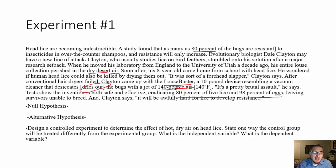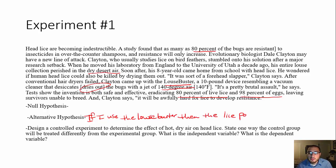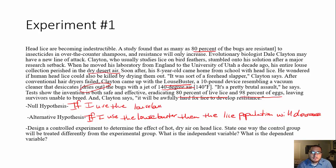Now you have to come up with a hypothesis. Your alternative hypothesis is going to be something like: if I use the Louse Buster, then the lice population will decrease — or the lice will die. Your null hypothesis is: if I use the Louse Buster, it will have no effect on the lice. Now it says to design a control experiment to determine the effect of hot, dry air on head lice, and state one way the control group would be treated differently than the experimental group.